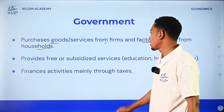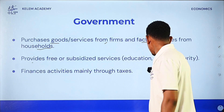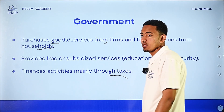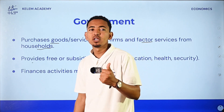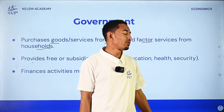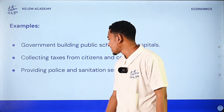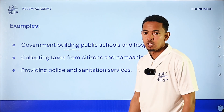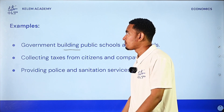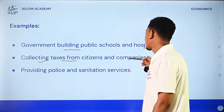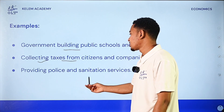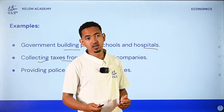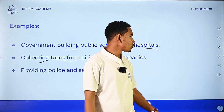The government provides free goods and services such as education, health, and security. It finances its activities mainly through taxes collected from citizens and companies. Examples include building public schools and hospitals, and providing police and sanitation services.